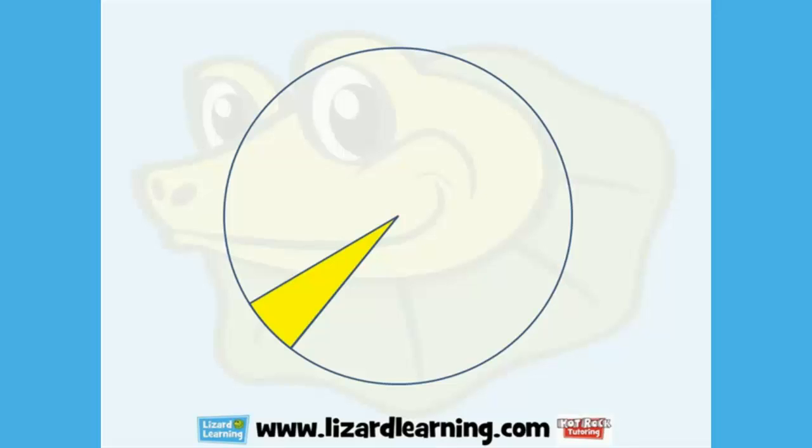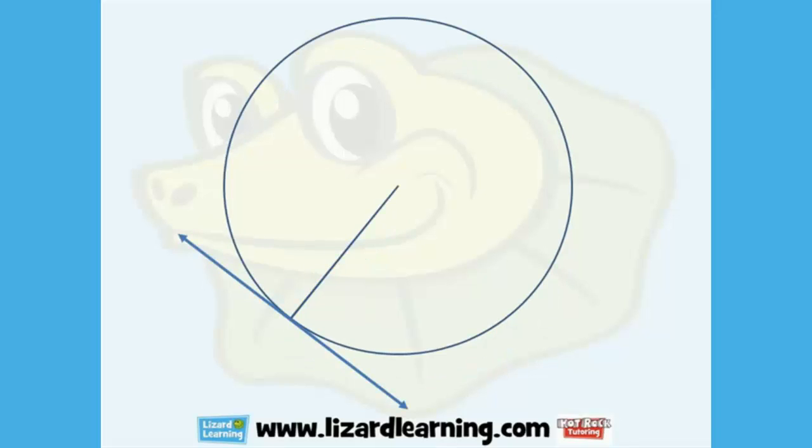Here we have the tangent with the radius of the circle being perpendicular to it. The tangent, this blue line here, just touches the circumference.